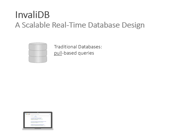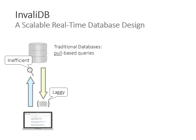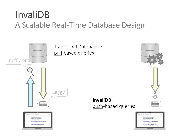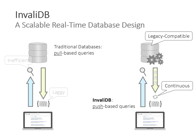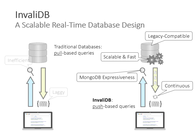To sum everything up: traditional pull-based databases are not the best choice for reactive or real-time applications because they require executing the same query over and over, which is both inefficient and laggy. Push-based real-time queries with InvalidDB are more efficient — you specify your query, keep the persistent database connection open, and receive changes whenever they happen, giving you a continuous stream of updates. Our approach is legacy-compatible, working with application stacks built on traditional pull-based databases; it is very scalable and fast; expressiveness is roughly that of MongoDB; and it is developer-friendly because you use the same query semantics for both pull and push-based queries.